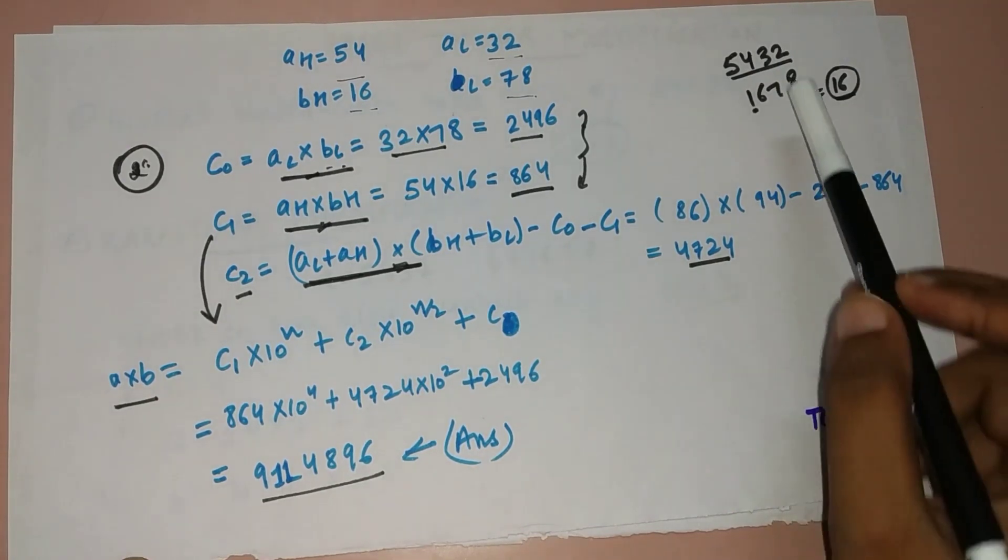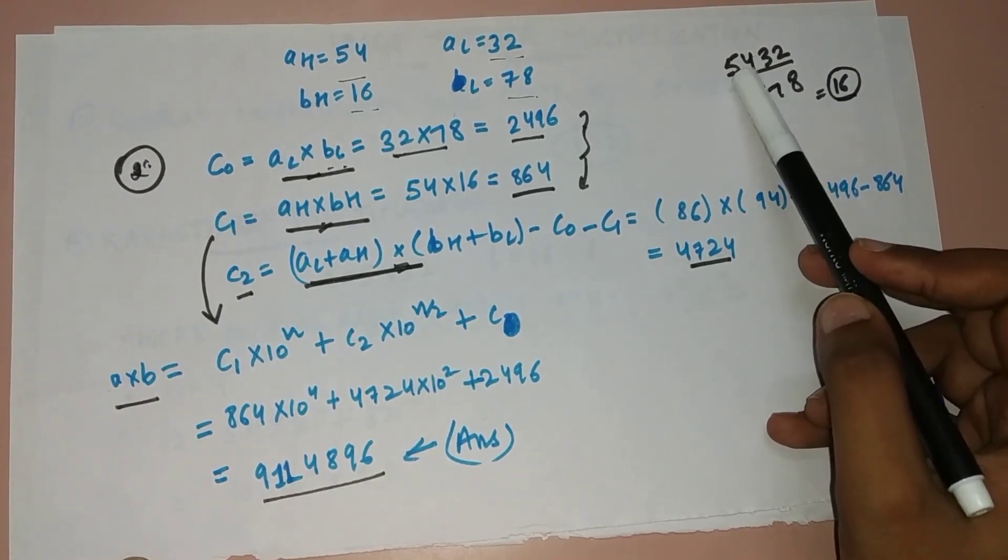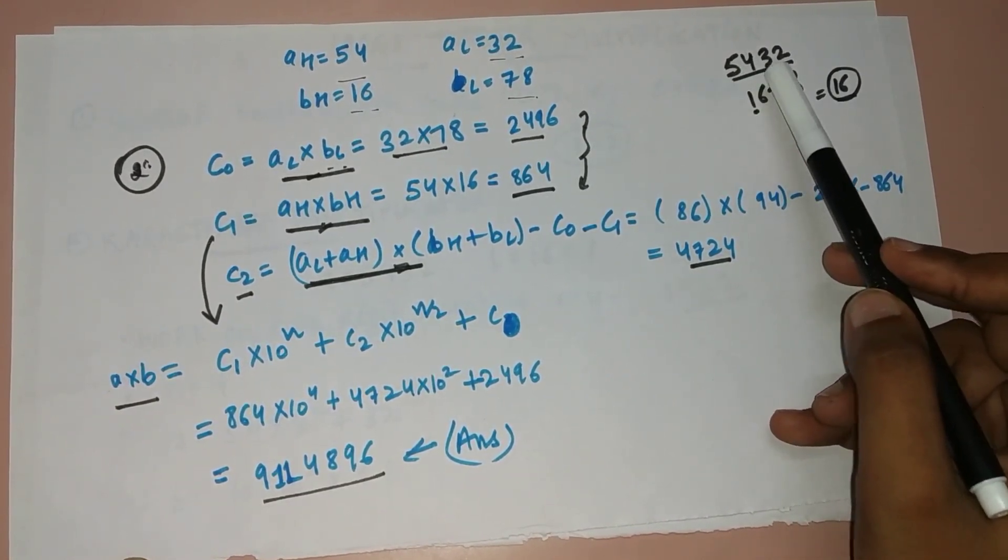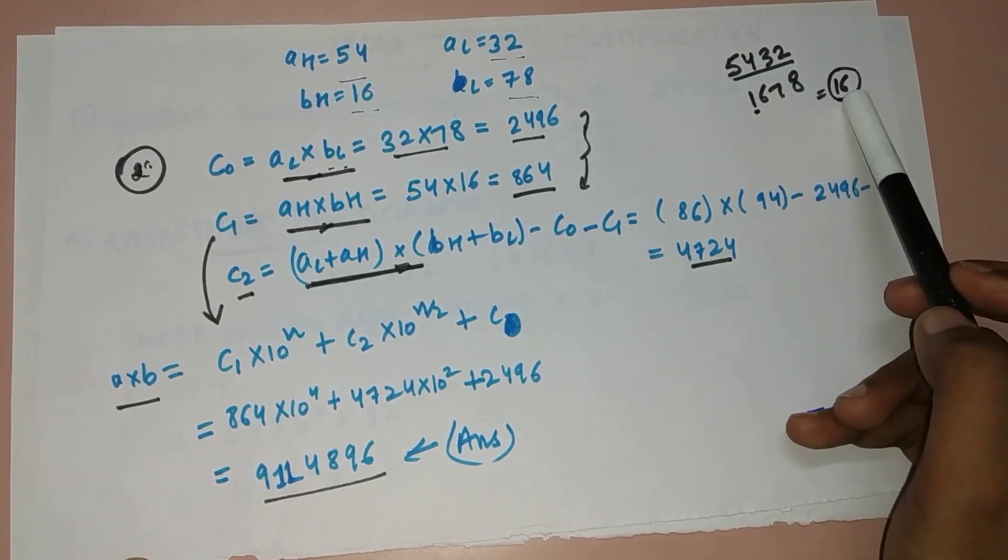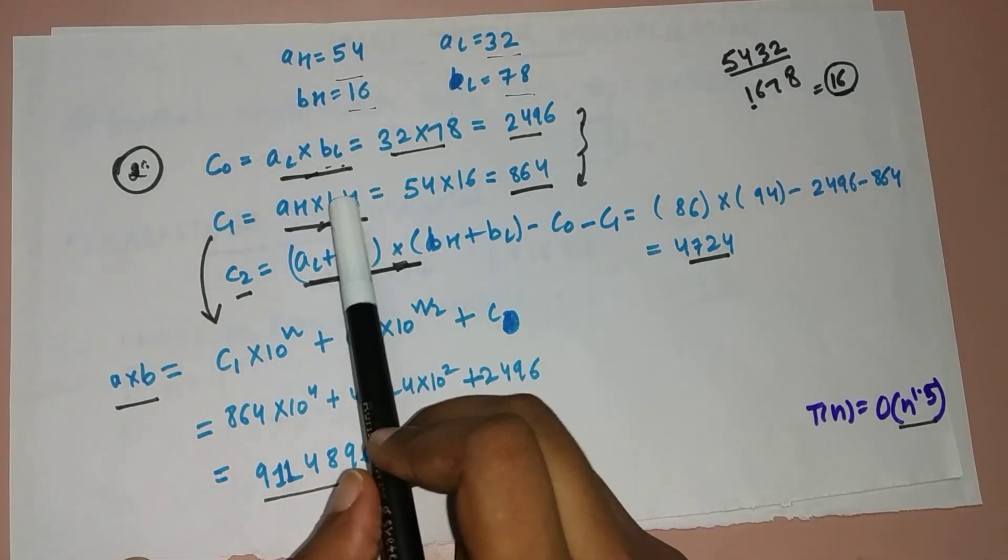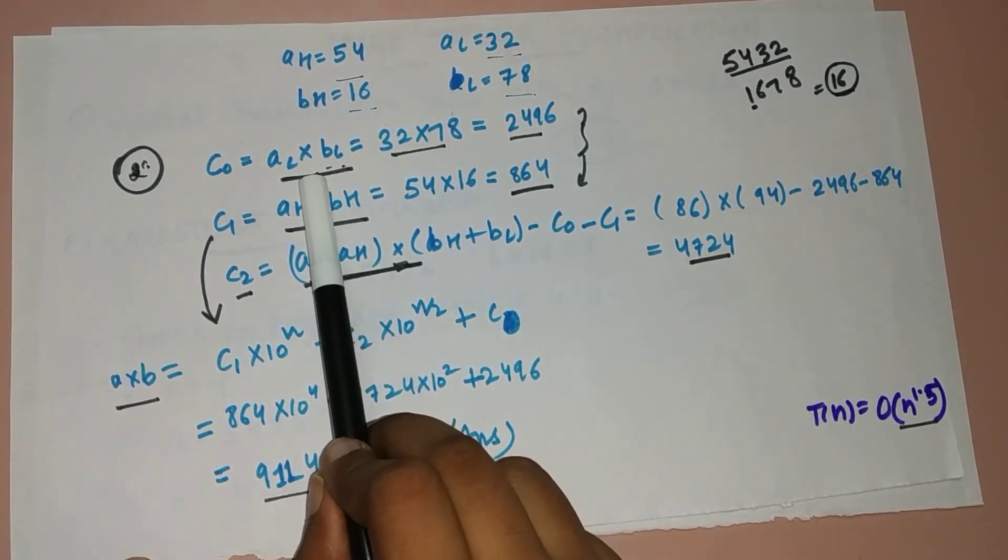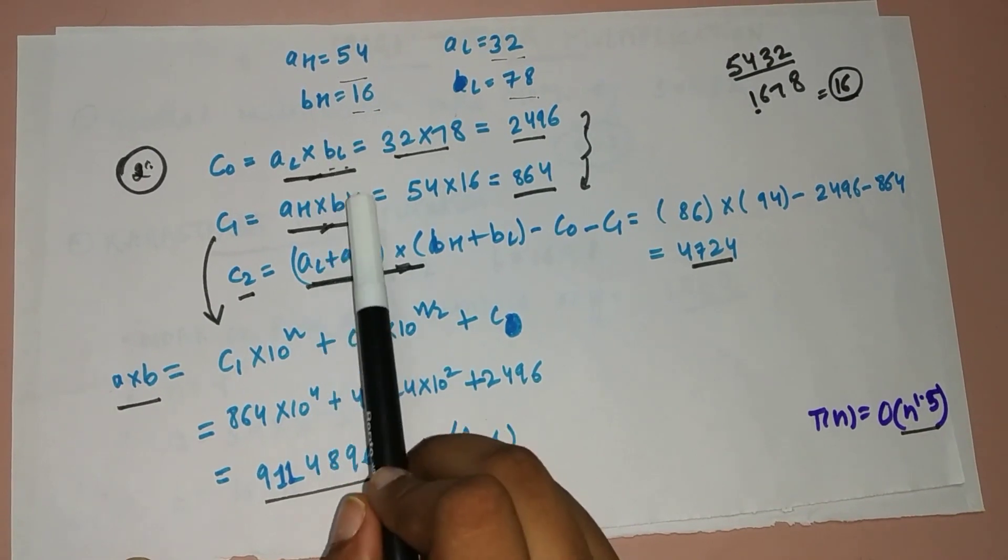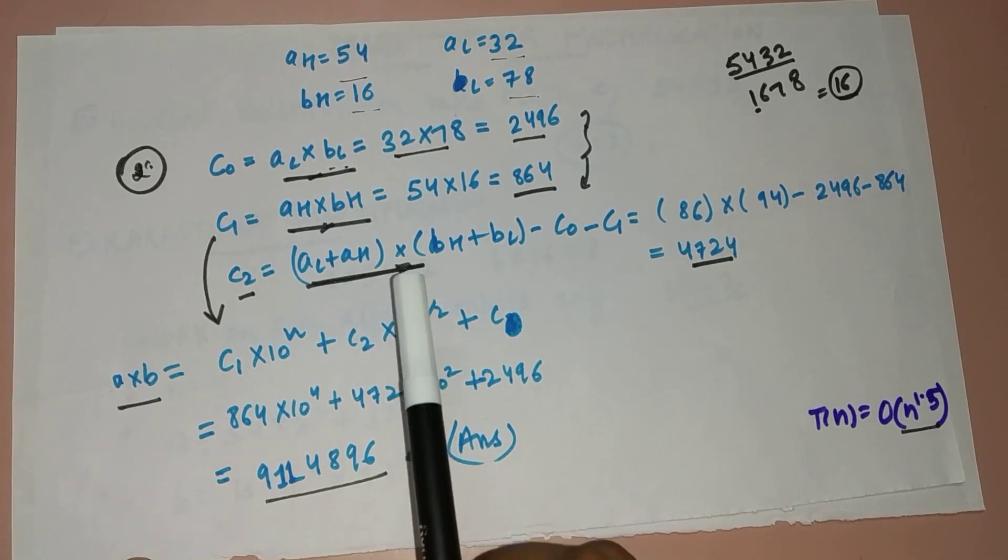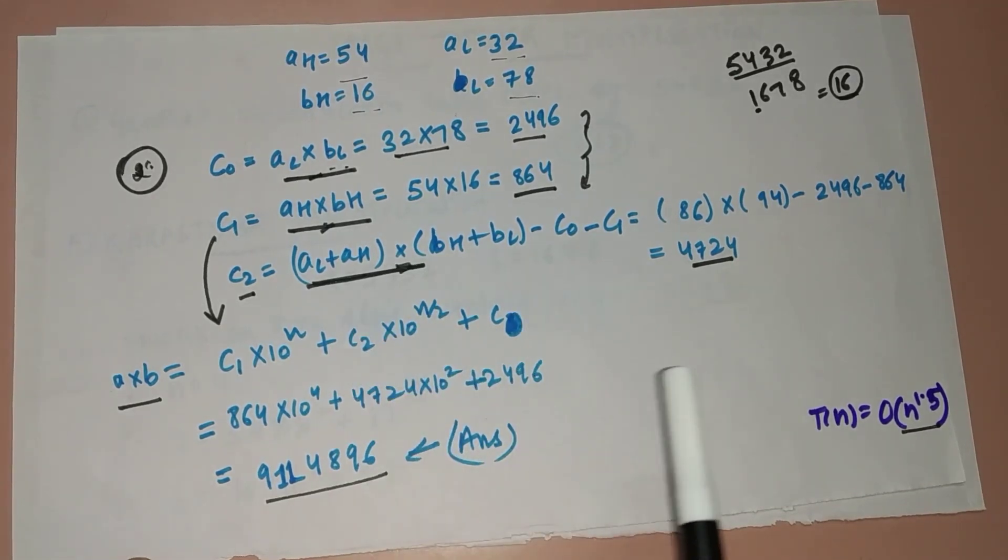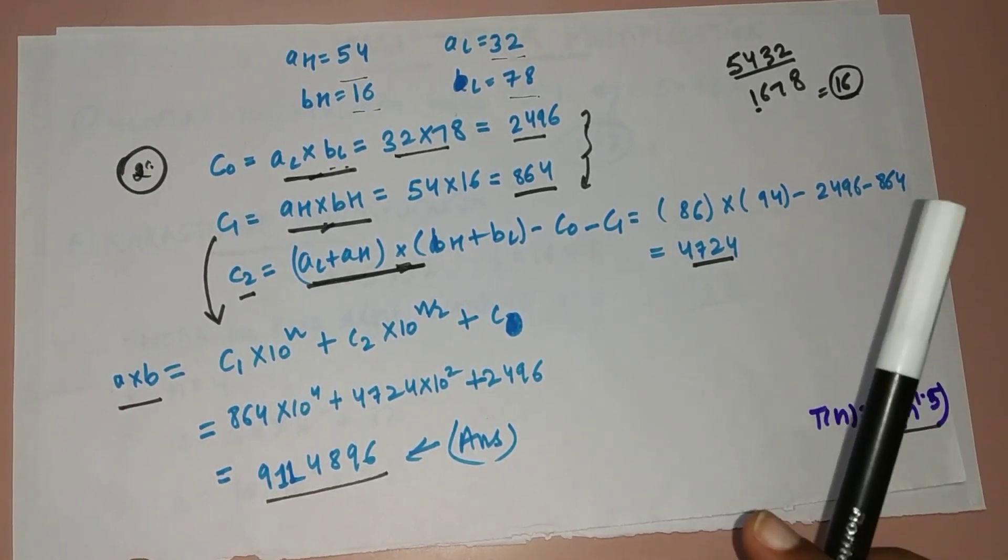Here we can see that in general multiplication, when I'm multiplying these two numbers, each number will be multiplied with every four digits, so basically total computations will be 16 multiplications. But here in this case, as I can see, total multiplications are only three: one multiplication taking place in c0, one in c1, and one in c2. Only three multiplications are taking place, which reduce a lot of computations.